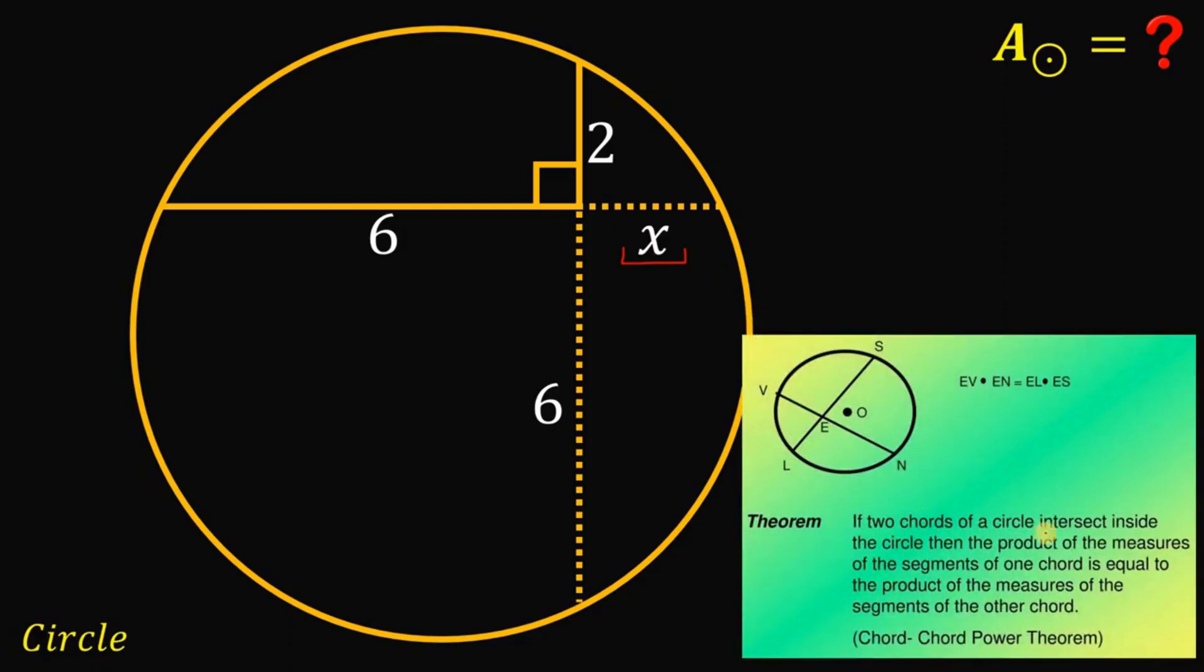Now it says, if two chords of a circle intersect inside the circle, then the product of the measures of the segments of one chord is equal to the product of the measures of the segments of the other chord. Now, given this figure,